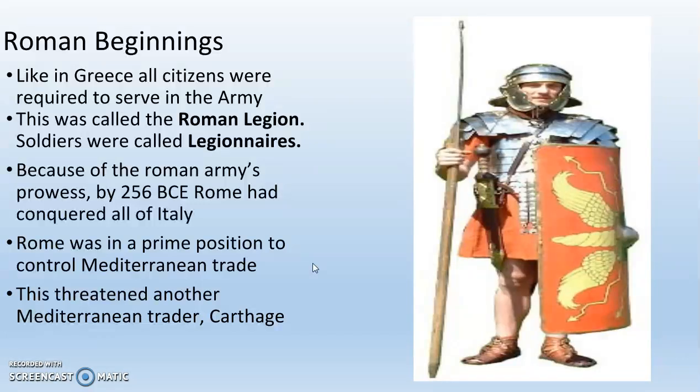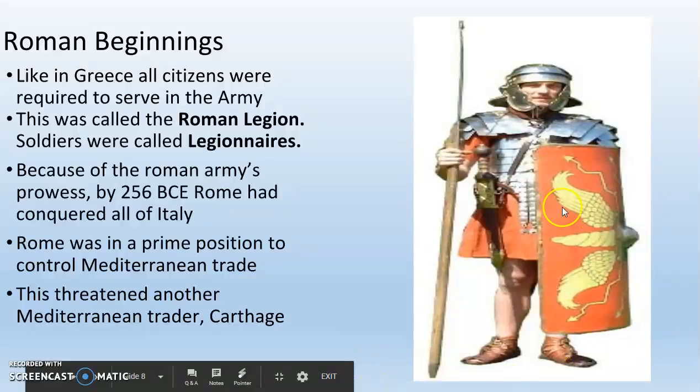Like in Greece, all citizens — patricians and plebeians — were required to serve in the Roman army, called the Roman legion. The Roman army, the big organization, is made up of legions — units of about 10,000 apiece. Each soldier was called a legionnaire.